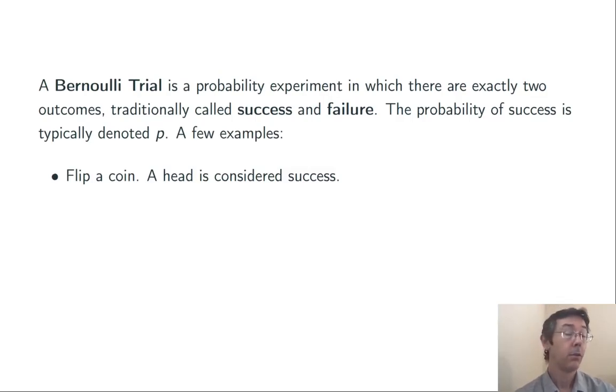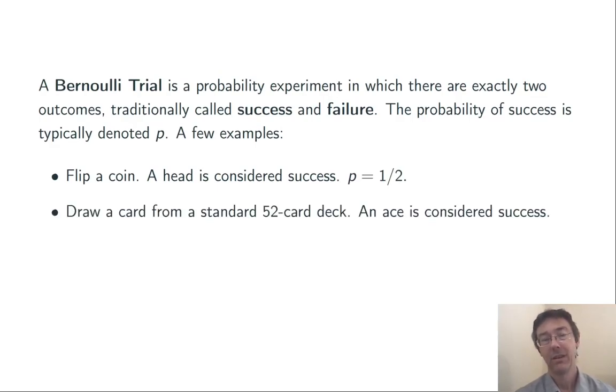Here's some examples. Flip a coin and consider a head to be a success. So p is one half. Draw a card from a standard 52 card deck and consider an ace to be a success. There are four aces, so p is 4 over 52 or 1 in 13.